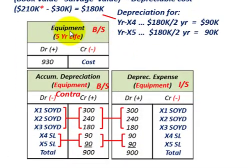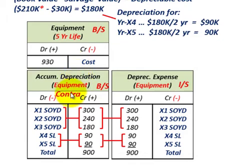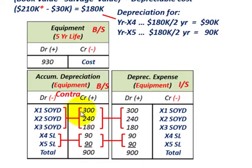For our journal entries, the equipment with its five-year life is on the balance sheet — the equipment account was debited by $930,000 as the cost of the equipment. Accumulated depreciation is the contra account that reduces our equipment value. For the first three years using sum-of-years-digits, we credit the accumulated depreciation account and debit the depreciation expense account on the income statement.